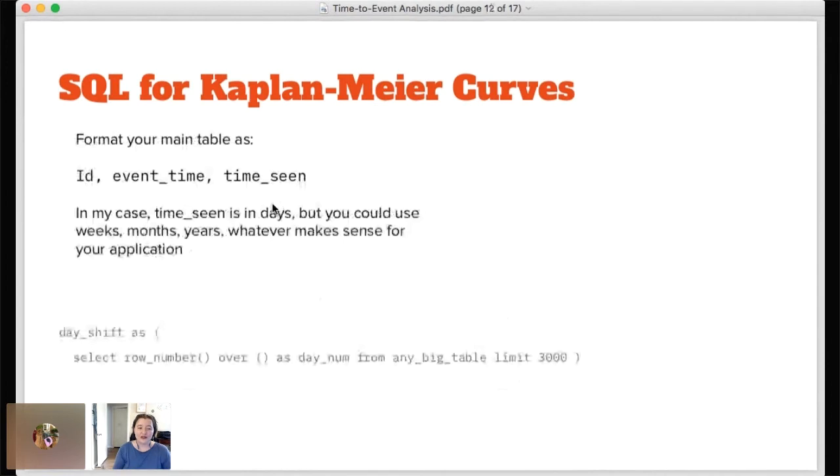So all you have to do, all you have to have in your main table is the event time and the time seen. And the event time is going to be null for all those censored observations. You're going to have a lot of those censored observations where you just don't, they don't ever hit the event. They might hit eventually later, but you don't have that data yet. But you always know how long you've seen them for, whether that's one week or four years or whatever it is. And so you just get that into the same frame and put it all together.